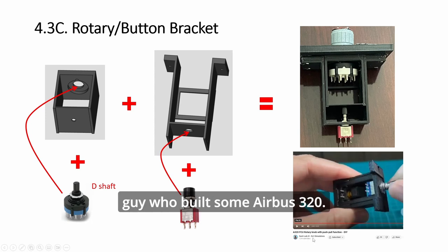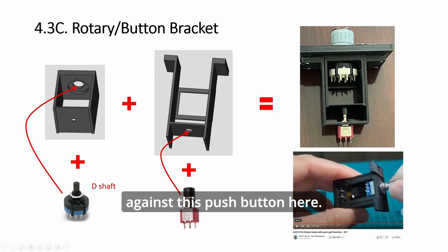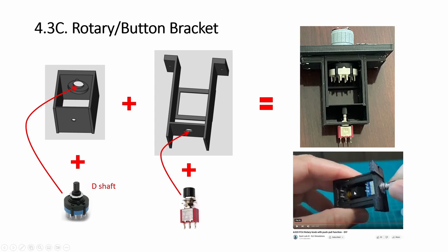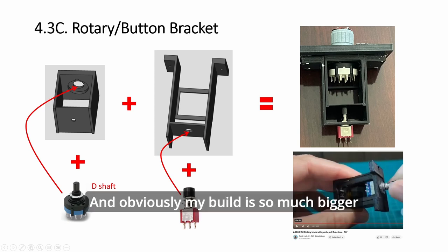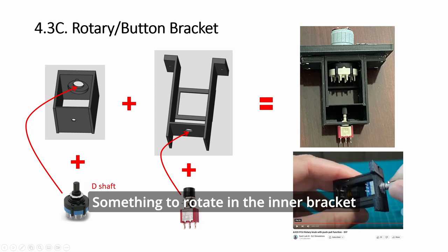I got the idea from this guy who builds Airbus 320, Senti Louis. He has quite a few good ideas. He's having a small encoder rotating and then pushing against this push button here. My push button is sitting below instead of on top, and instead of an encoder I have a rotary switch. Obviously my build is much bigger because the rotary switch is much bigger than the encoder, but the concept is the same: something to rotate in the inner bracket and something on the outer bracket to have a push button or some other switch.